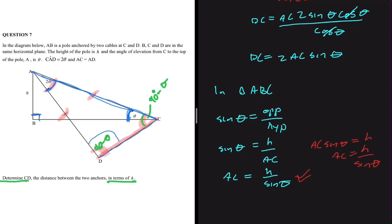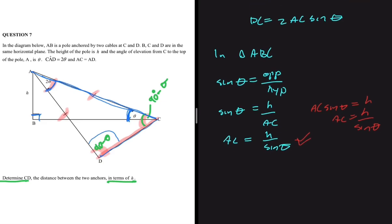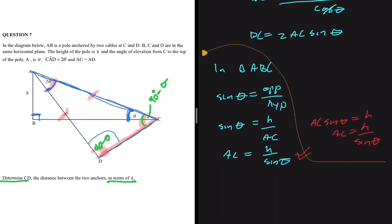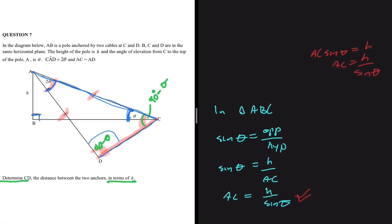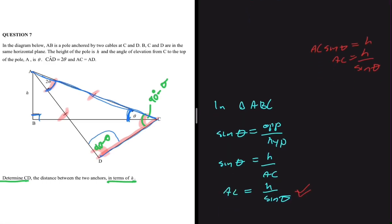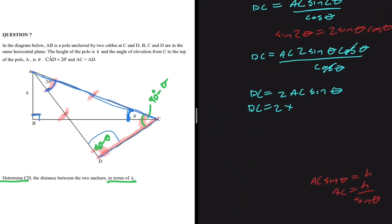Now we substitute AC back into our expression for DC. DC equals 2 multiplied by AC, which is h divided by sinθ, then multiplied by sinθ. The sinθ terms cancel out, so DC equals 2h.